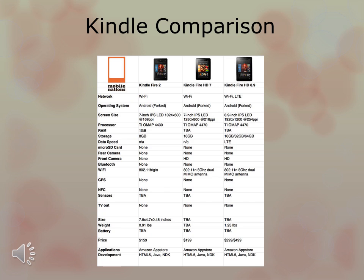Since this class is all about Kindle, I also wanted to provide you with a Kindle comparison chart to show the differences between the different kinds of Kindles. We're primarily going to be working with the Kindle Fire HD 7 today, though you'll notice there's really not much difference with the HD 8.9 minus the screen size and LTE compatibility. The chart covers operating system, network, screen size, processor, RAM, storage, speed, micro SD card slot, cameras, Bluetooth, Wi-Fi, GPS, sensors, TV out, size, weight, battery, price, and application development.